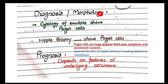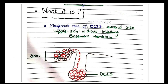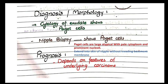For diagnosis, cytology of the secretions can be performed. If you take a sample of the discharge and examine it under a microscope, you will see Paget cells. Similarly, nipple biopsy — taking a piece of tissue from the nipple — will also show Paget cells. Paget cells in the skin are the hallmark of the diagnostic morphology of Paget's disease of nipple.